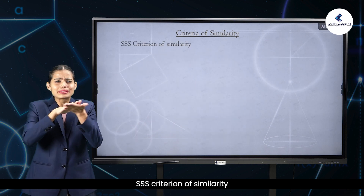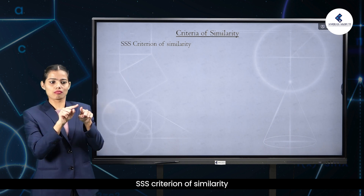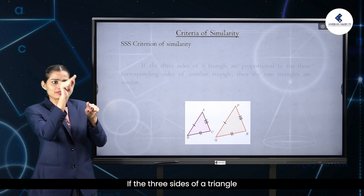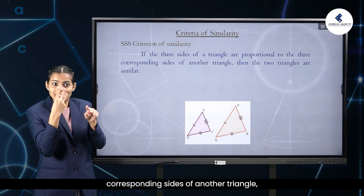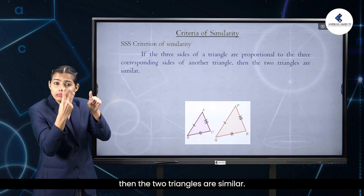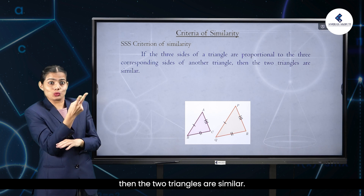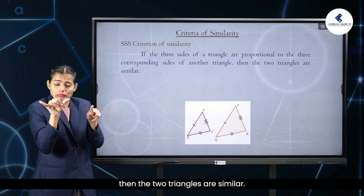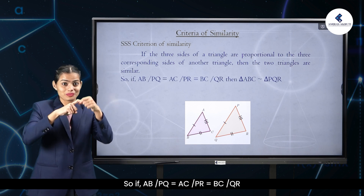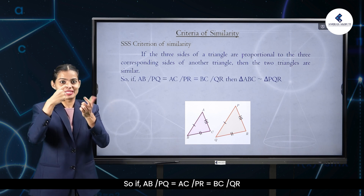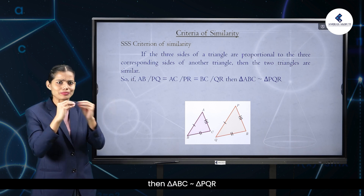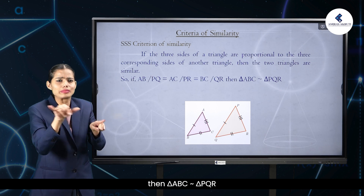Side-side-side criterion of similarity: if the three sides of a triangle are proportional to the three corresponding sides of another triangle, then the two triangles are similar. So, if AB/PQ = AC/PR = BC/QR, then triangle ABC ~ triangle PQR.